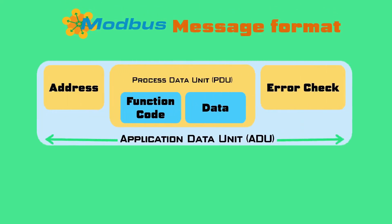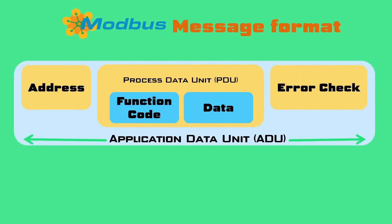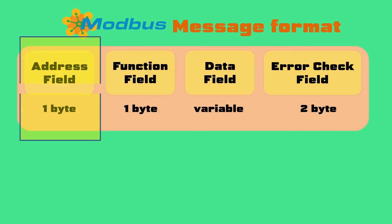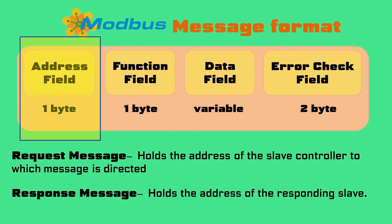A Modbus message frame consists of an Application Data Unit which encapsulates a Process Data Unit. In totality, there are four fields in any Modbus message. The first field is the address field — a single byte of information. In request frames, this byte identifies the slave controller to which the request is being directed. In response frames, this field holds the address of the responding device.